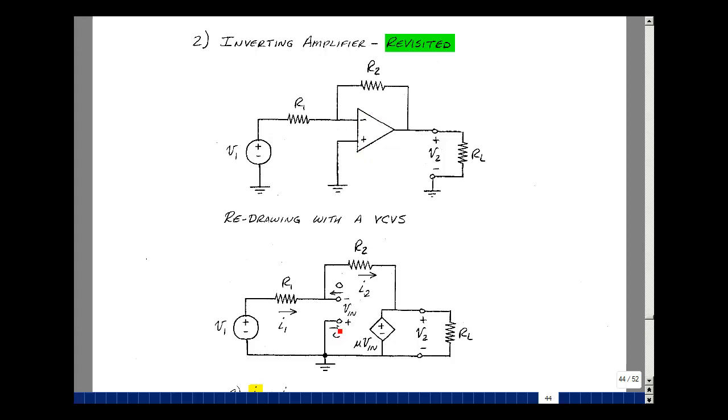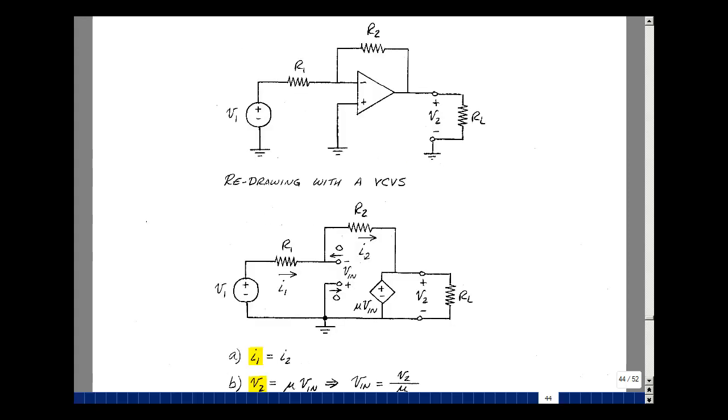Let's replace the op-amp now by its model of a voltage-controlled voltage source. So between the plus and minus terminals, I have an open circuit that causes the current to be zero in and out of those terminals. And between the output terminal and ground, there is a voltage-controlled voltage source, where the voltage across the input is multiplied by mu.